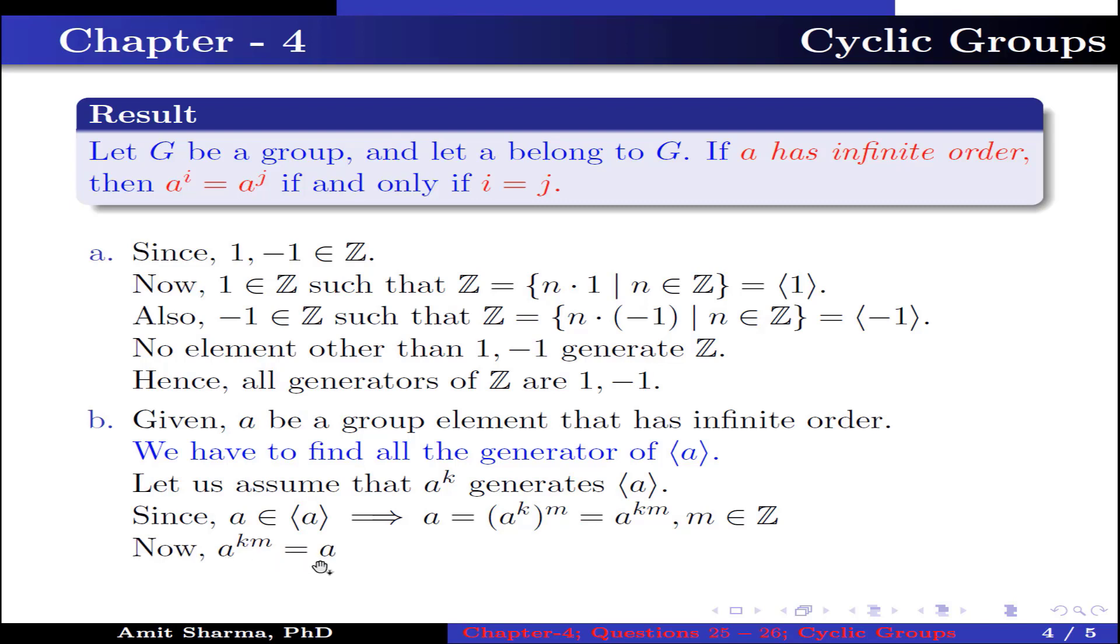Since a^(km) equals a, this implies km equals 1. This further implies k equals ±1. Therefore, the generators of the group generated by a are a and a^(-1).